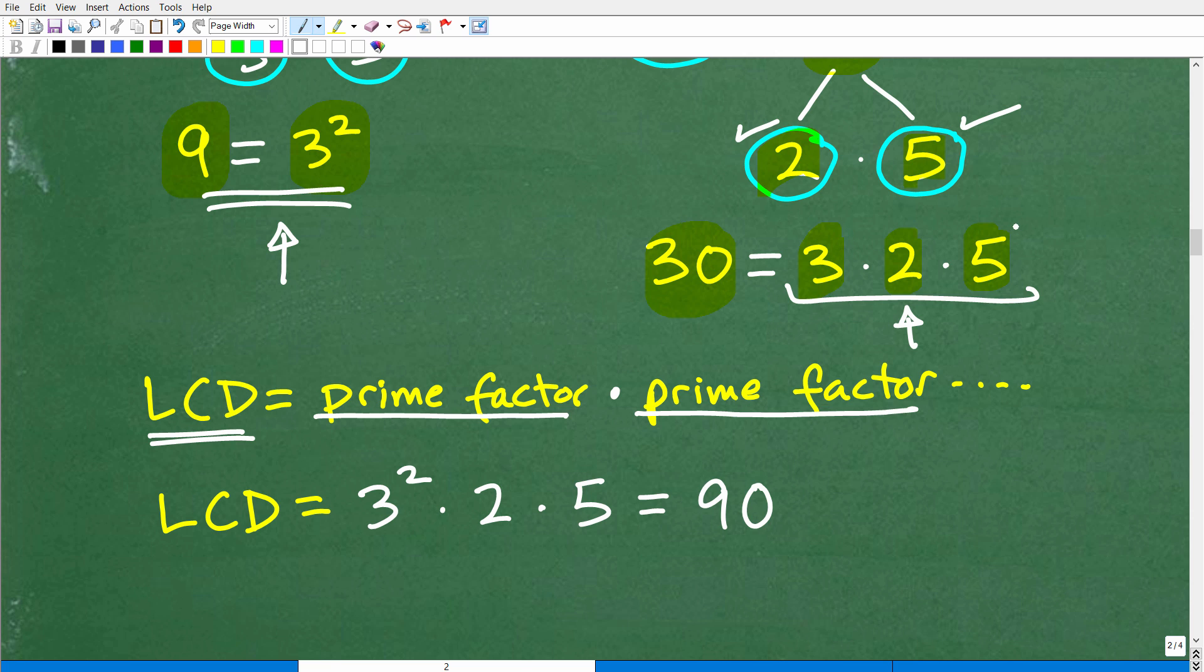I'm going to have to have 5, that's a prime factor. I need to have a 2. And then I have a 3 here and I have a 3 squared here. This is where you have to really pay attention. This 3 is 3 to the 1st. This one over here is 3 squared. Which 3 do we represent as a prime factor? It's always the one with the highest power. You always pick the one with the highest power and put that into our product for the LCD.